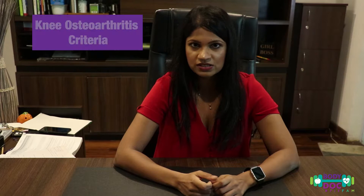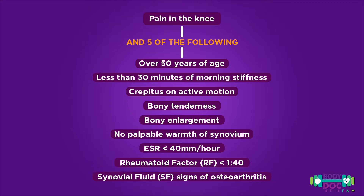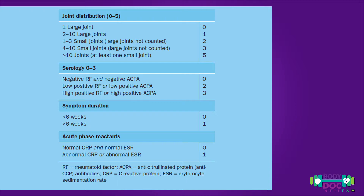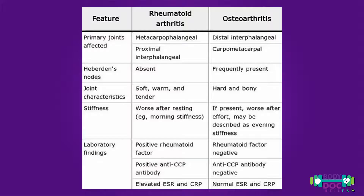Knee osteoarthritis is diagnosed with joint pain plus five of the following features: age more than 50, more than 30 minutes of morning stiffness, bony tenderness, bony enlargement, ESR more than 40, and warmth. Rheumatoid arthritis is diagnosed based on a scoring system with individual domains including the joints involved, acute phase reactants, serology, and duration of symptoms. A score of more than six is considered positive for rheumatoid arthritis.